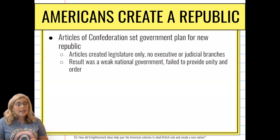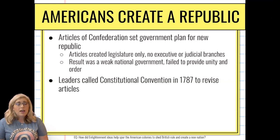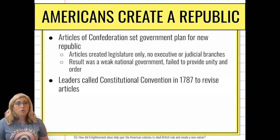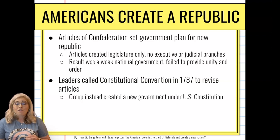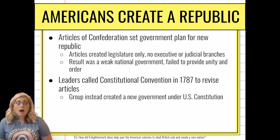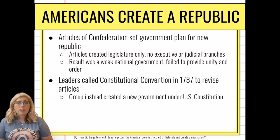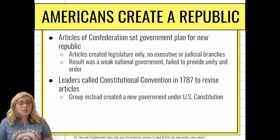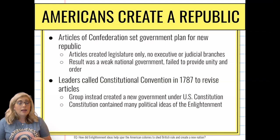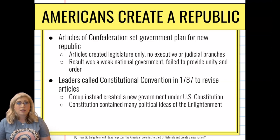So in 1787, they called a constitutional convention and came together to revise the articles and draft a new constitution. They insisted they needed a constitution and a federal government where there is a strong national government and then some power in the smaller state governments. The constitution contained a lot of different ideas from the Enlightenment, and that's what really helped them draft a living document that is still here today.